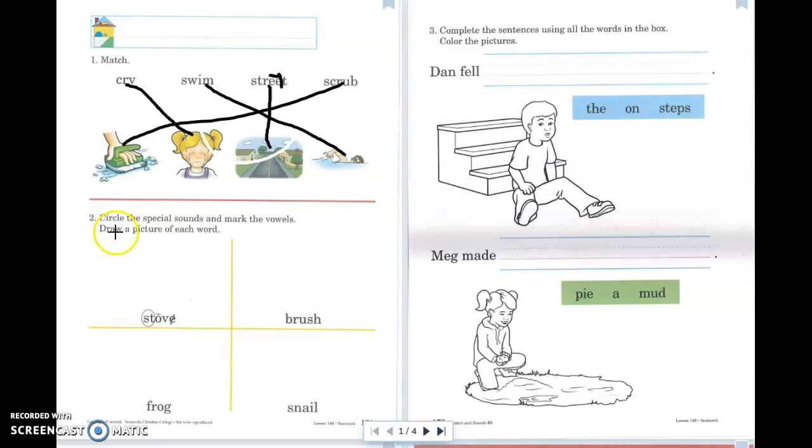For number two, what I need to do is I need to mark the vowels and draw a picture of each word. I'm not going to circle the special sounds. If you want to circle the special sounds, you may. The special sounds are just blends. We're not going to circle them most of the time, so I wouldn't worry about it. Just worry about the vowels.